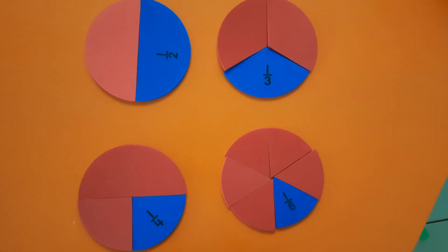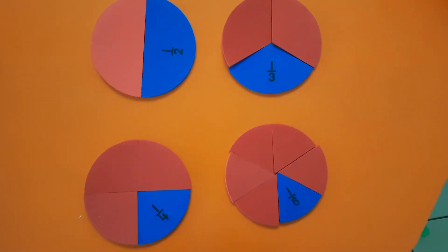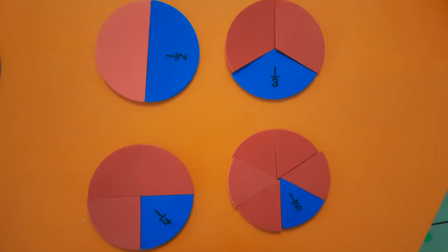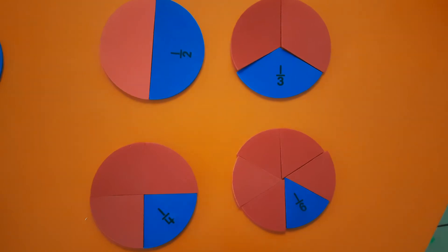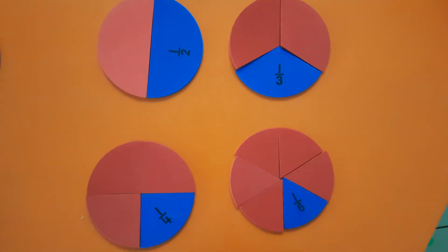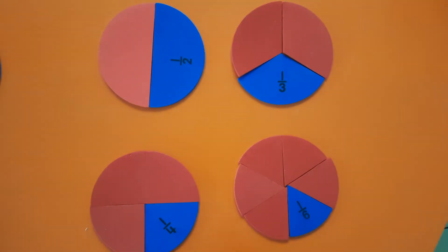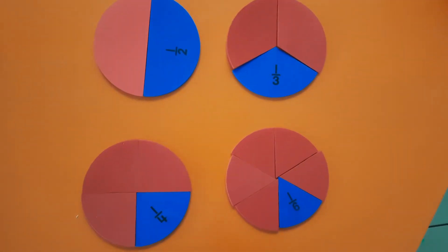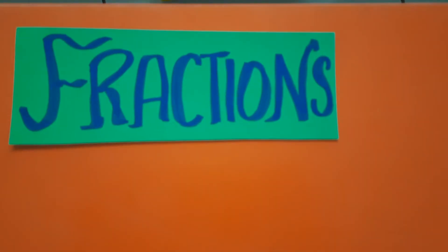Yes! One by two, one by three, one by six, one by four — all these fractions have numerator one, so they are unit fractions. These are all examples of unit fractions, where all the numerators are one. Happy learning!